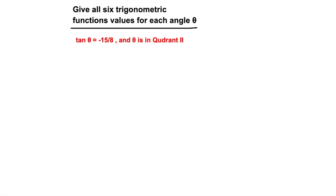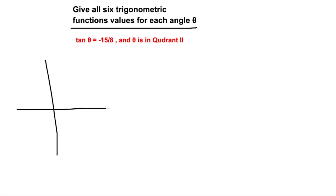In this video we will be finding all six trigonometric functions. For the first problem, tangent of theta is equal to negative 15 over 8, and theta is in the second quadrant. We'll draw the x and y coordinate plane. In the first quadrant, all trigonometric functions — sine, cosine, tangent, cotangent, cosecant, and secant — are all positive.